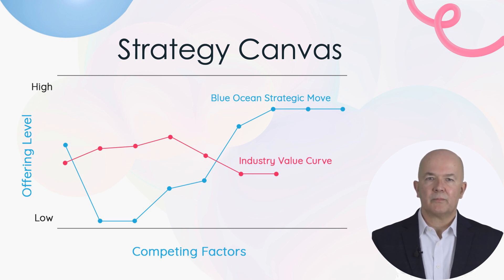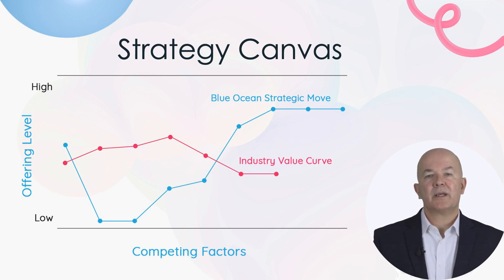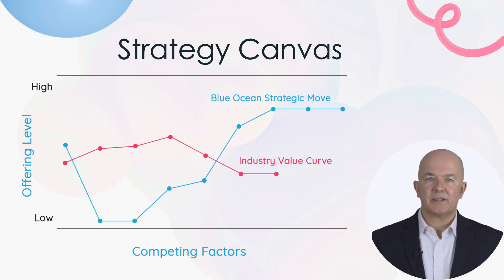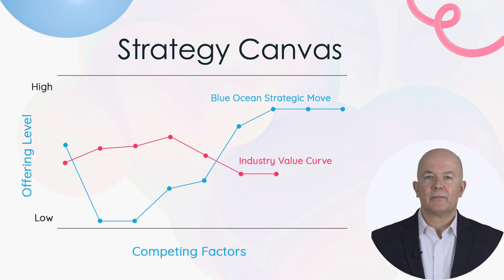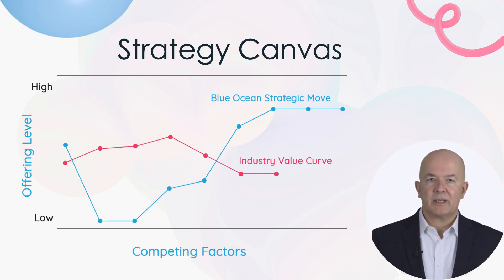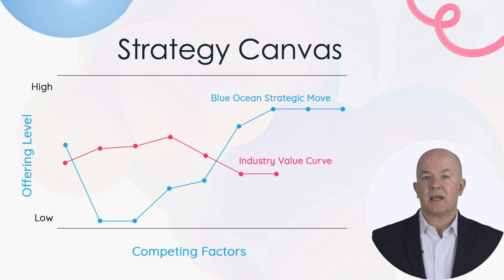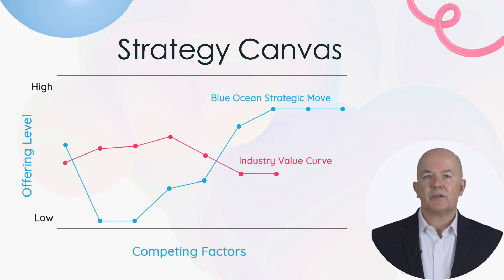If your curve matches the industry curve, this is where you need to do the next stage in the process: innovation. Because you have two separate curves in front of you, you don't have to just blindly innovate and hope for the best. Instead you can use the curves as an indication of what you need to improve and develop in order to stand out.